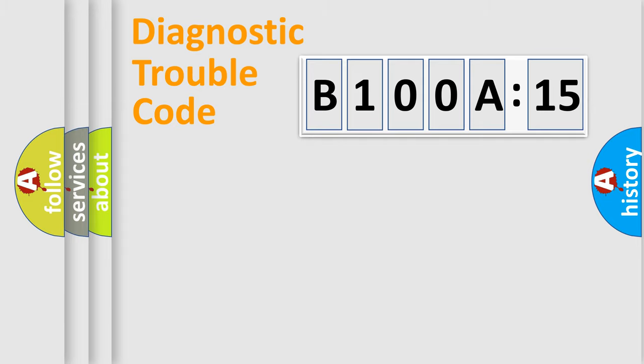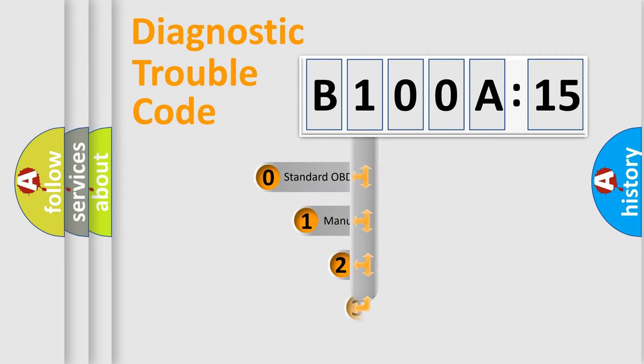Powertrain, body, chassis, network. This distribution is defined in the first character code.